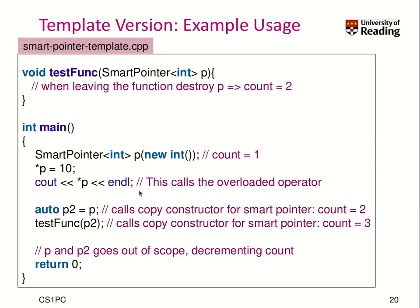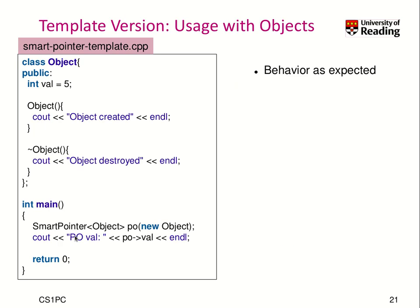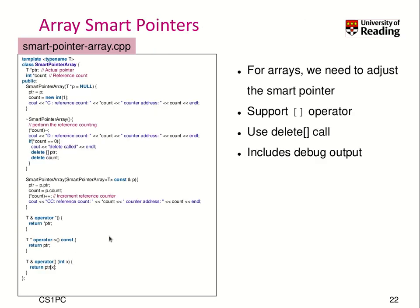This is really great if you use this concept throughout your code — you never have to worry about a memory leak anymore, and it's mostly efficient code. You can use the same concept for an object. Here we have an object with an internal value of 5, printing 'object created' and 'object destroyed' in the destructor to monitor behavior. We create a smart pointer to this object, print its value, and return 0. The object is constructed properly and will be automatically destroyed.